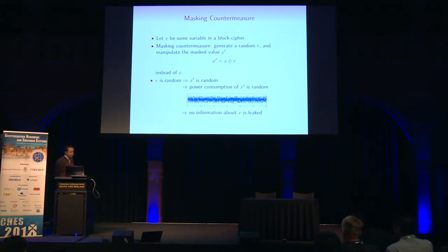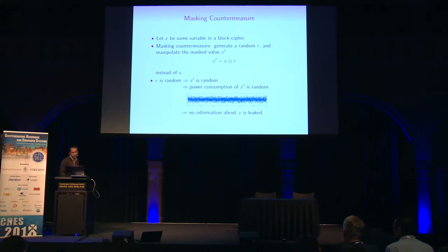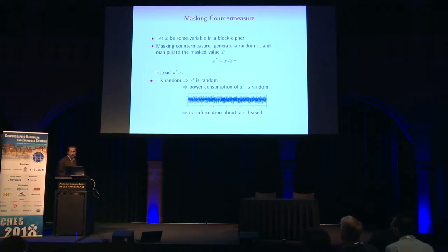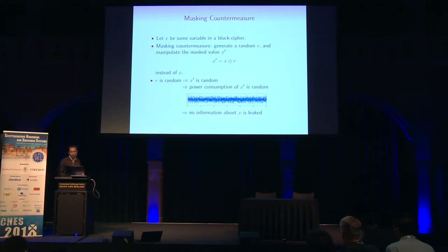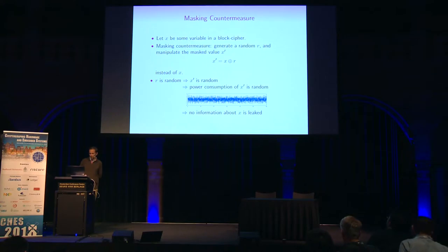In the masking countermeasure, instead of processing some variable X in a block cipher, we mask X with a random R and process only the masked variable X prime, which is X XOR R. Since R is random, X prime is also random, so the power consumption of X prime is going to be random, and no information about X is leaked.